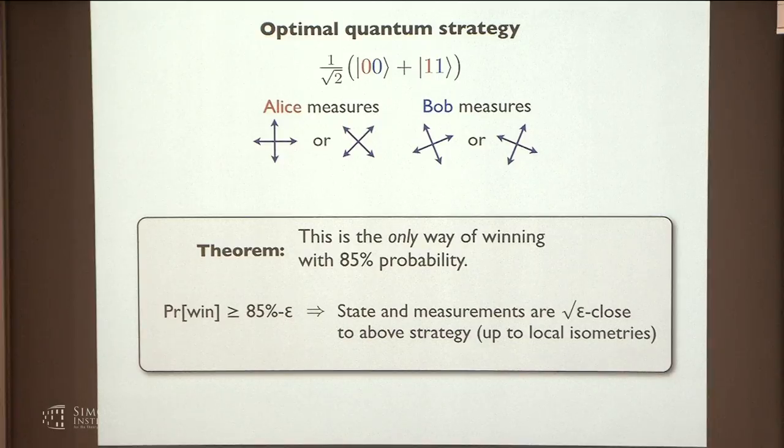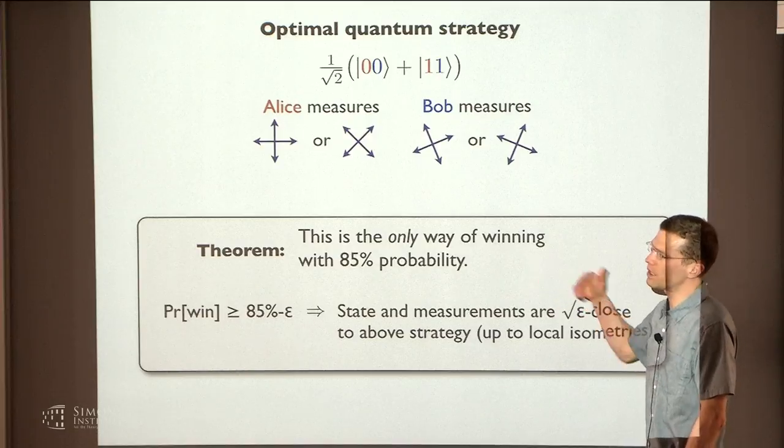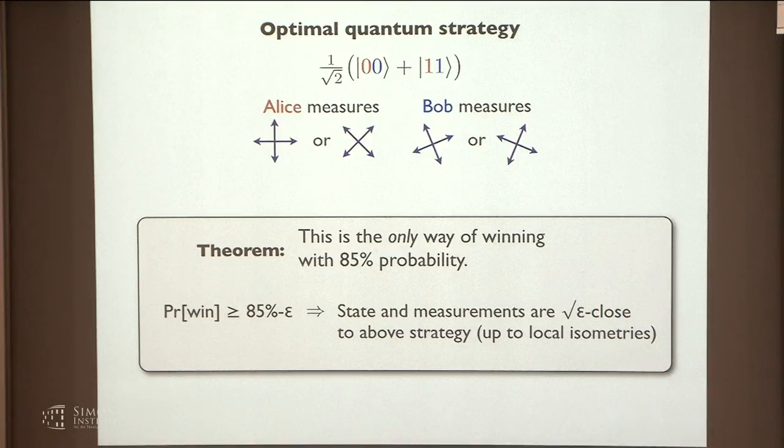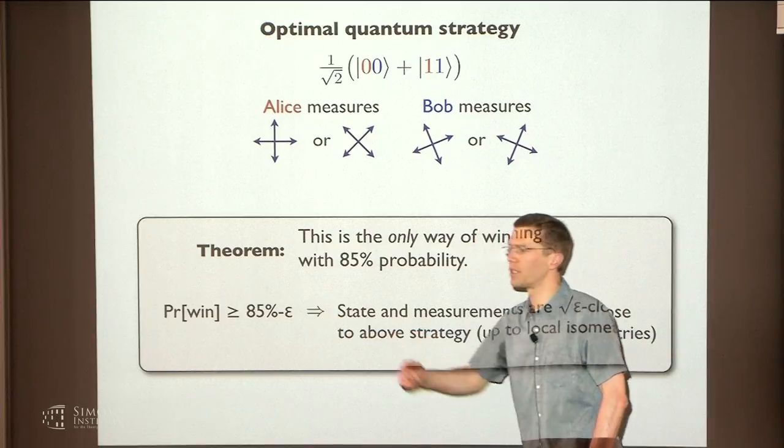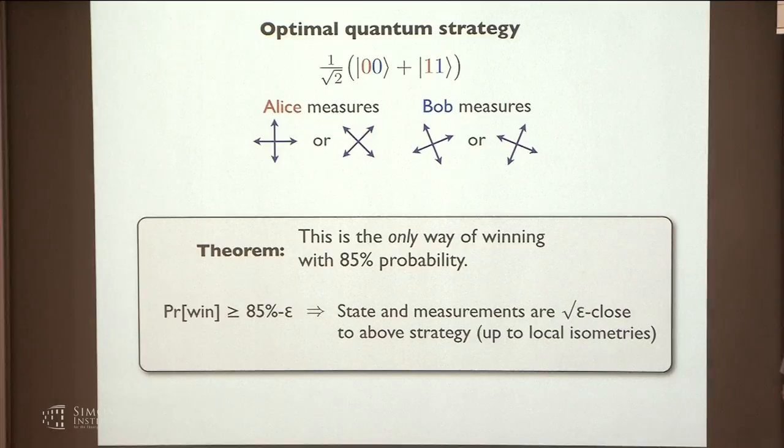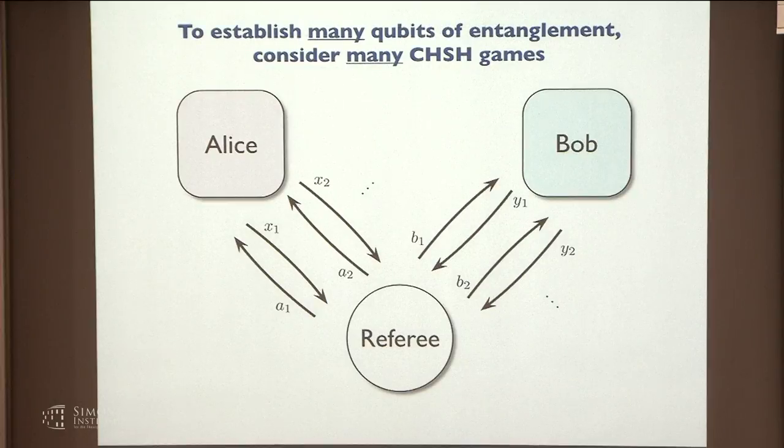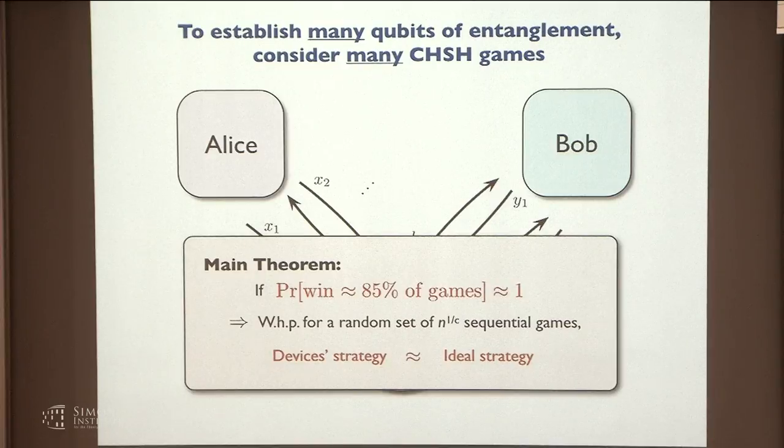So in fact, there are stronger tests out there. There's a theorem that says not only is it the case that better than 75 percent implies entanglement, but if you're close to 85 percent, so if you're 85 percent minus epsilon, then you have to be behaving according to this particular quantum strategy. So you have to have a state that's about square root of epsilon close to that cat state, and the measurements have to be square root of epsilon close as well. We can extend this test even further by playing many CHSH games in order to test not only that I have one qubit worth of entanglement, which is not so impressive, but to test that I have many qubits worth of entanglement, which is pretty cool.